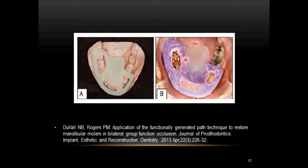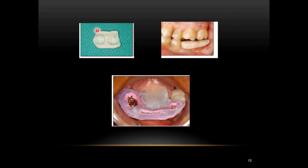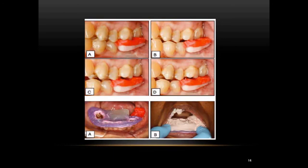For complete adaptation, tray adhesive was applied and the stone crib was relined to closely adapt to the oral cavity. A putty matrix acted as a base for placing the functional wax, with 0.5 mm of gap maintained between the matrix and the opposing teeth. The stone crib was first placed in the patient's mouth, followed by the putty matrix, and then the softened functional wax was applied. The patient then power bit in centric and performed protrusive and lateral excursions, recording all movements in the functional wax.